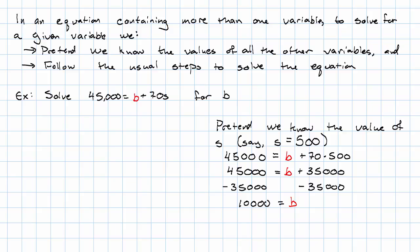So that gives us an idea of what we're really going to do. If we knew what S was, we would plug it in, and then we would get rid of that term. What we're going to really do is just skip all that arithmetic. So we've got 45000 equals B plus 70S. And now we're going to subtract 70S from both sides.